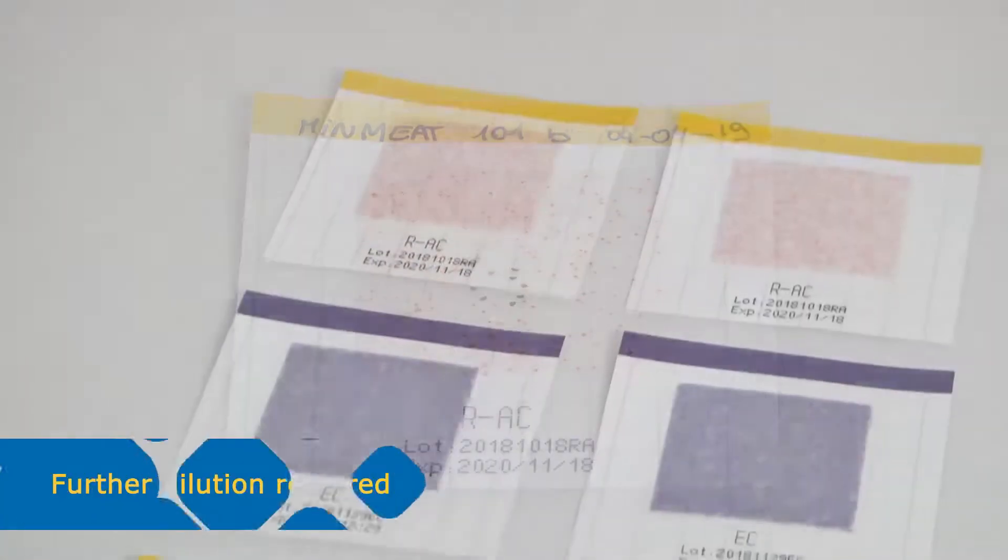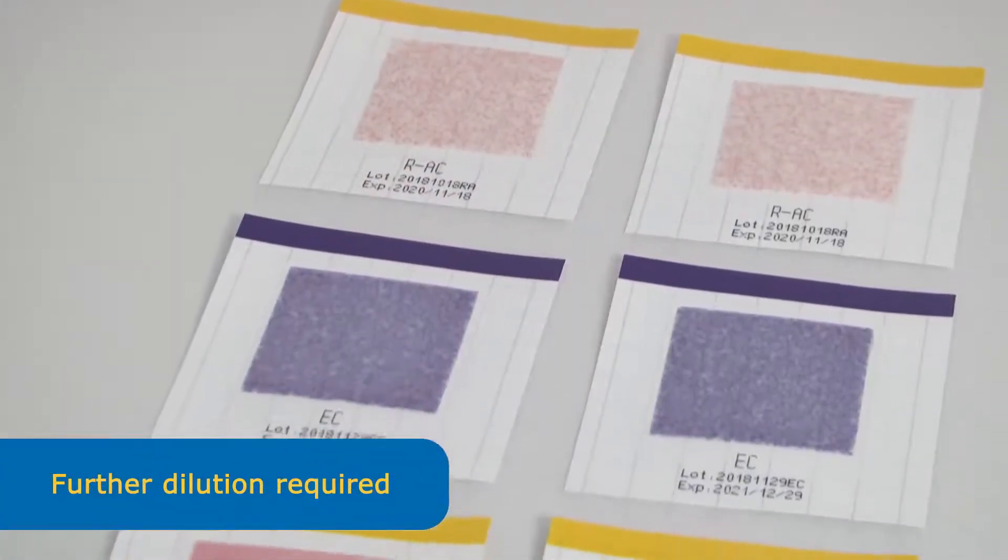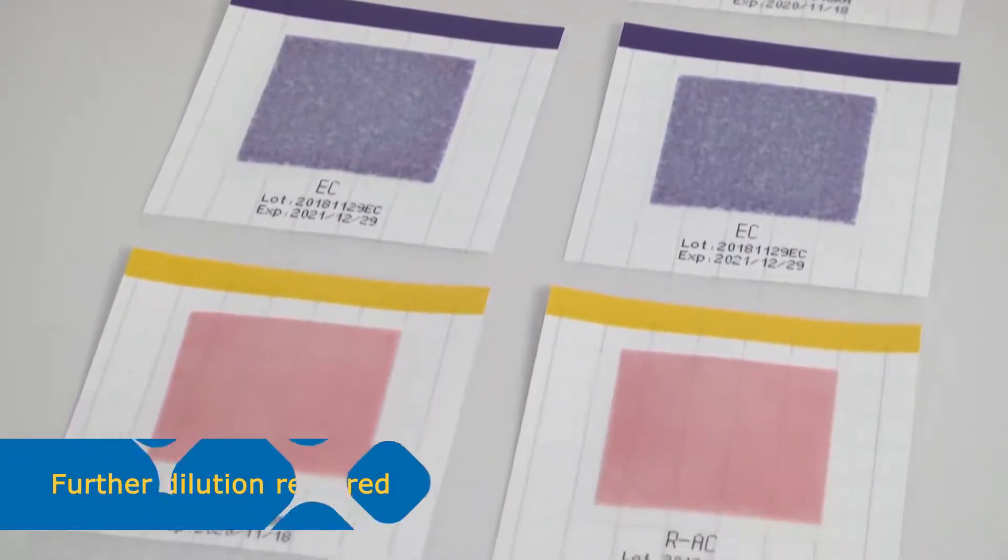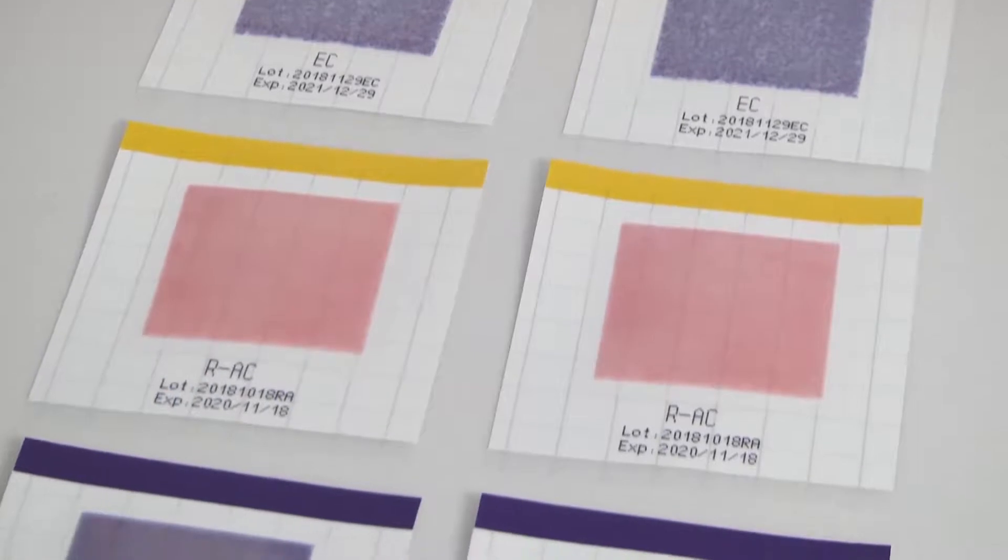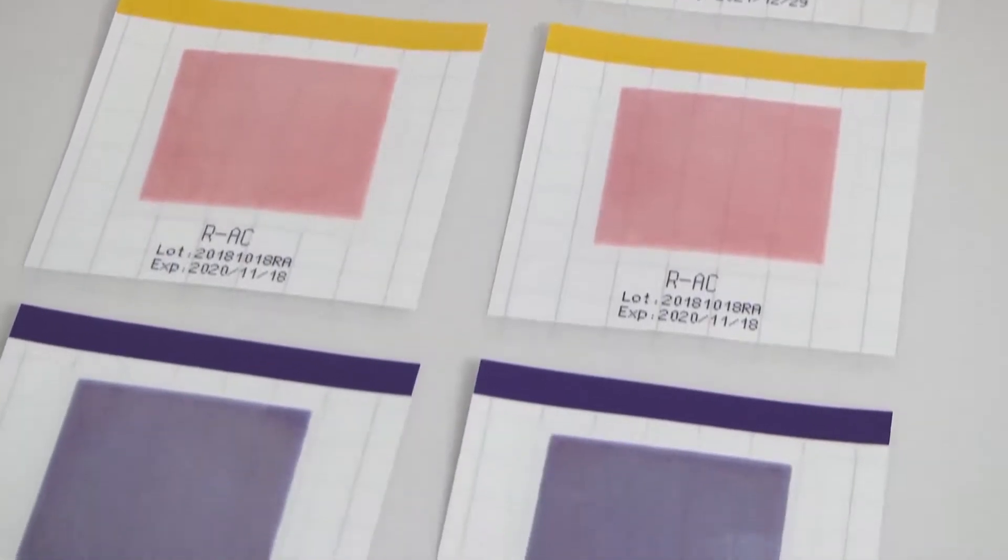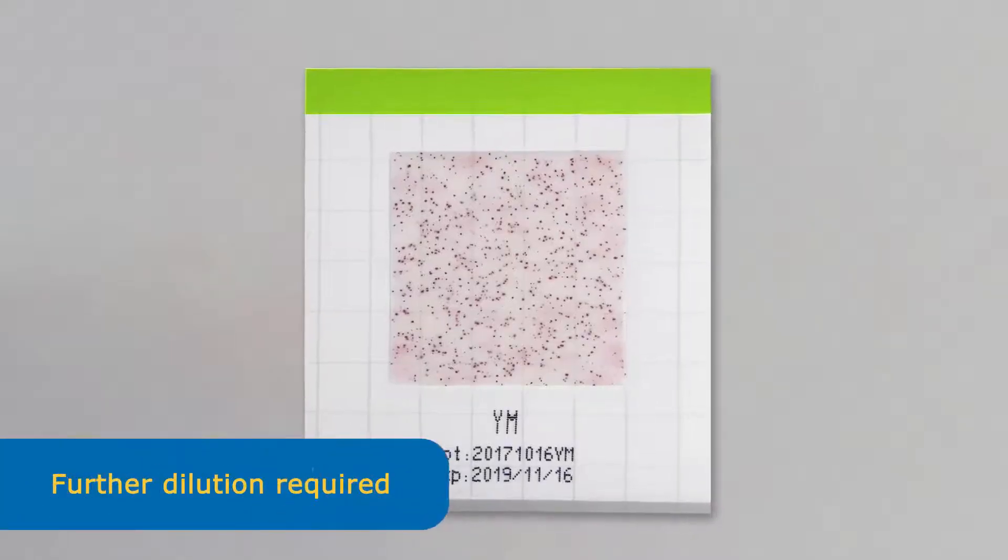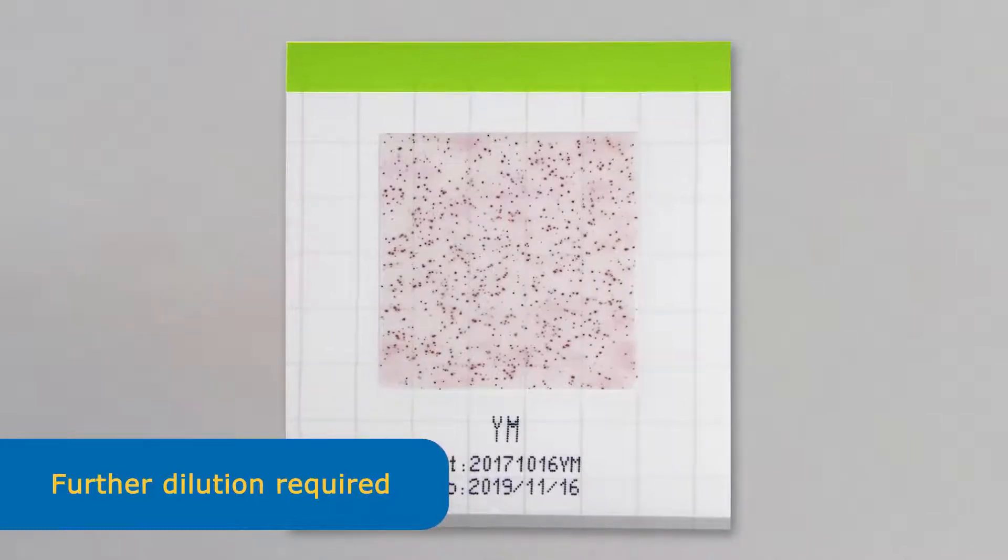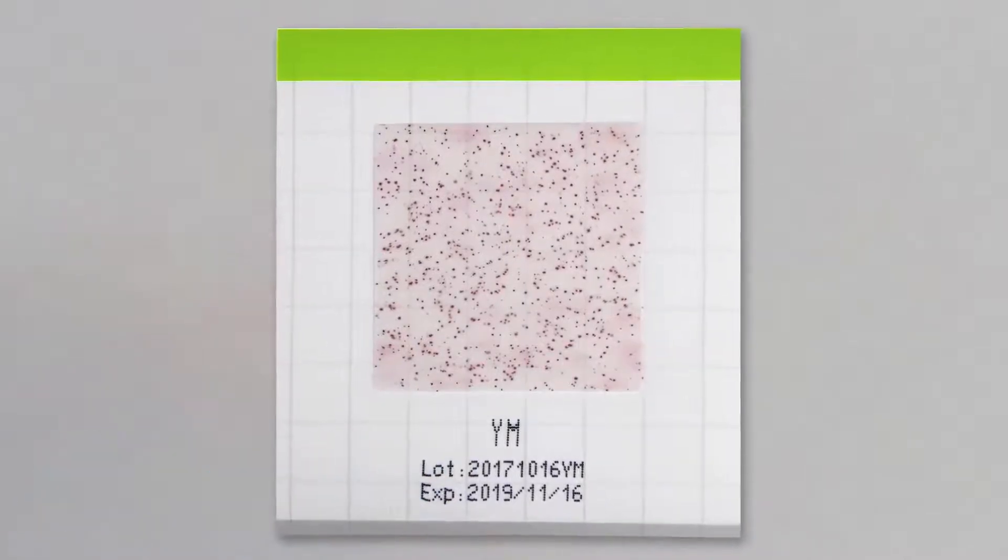If more than 400 CFU are grown, the entire pad may appear stained. In general, if more than 300 CFU are grown, the sample should be diluted further and retested. For yeast and mold, further dilution and retesting may be required at 200 CFU.